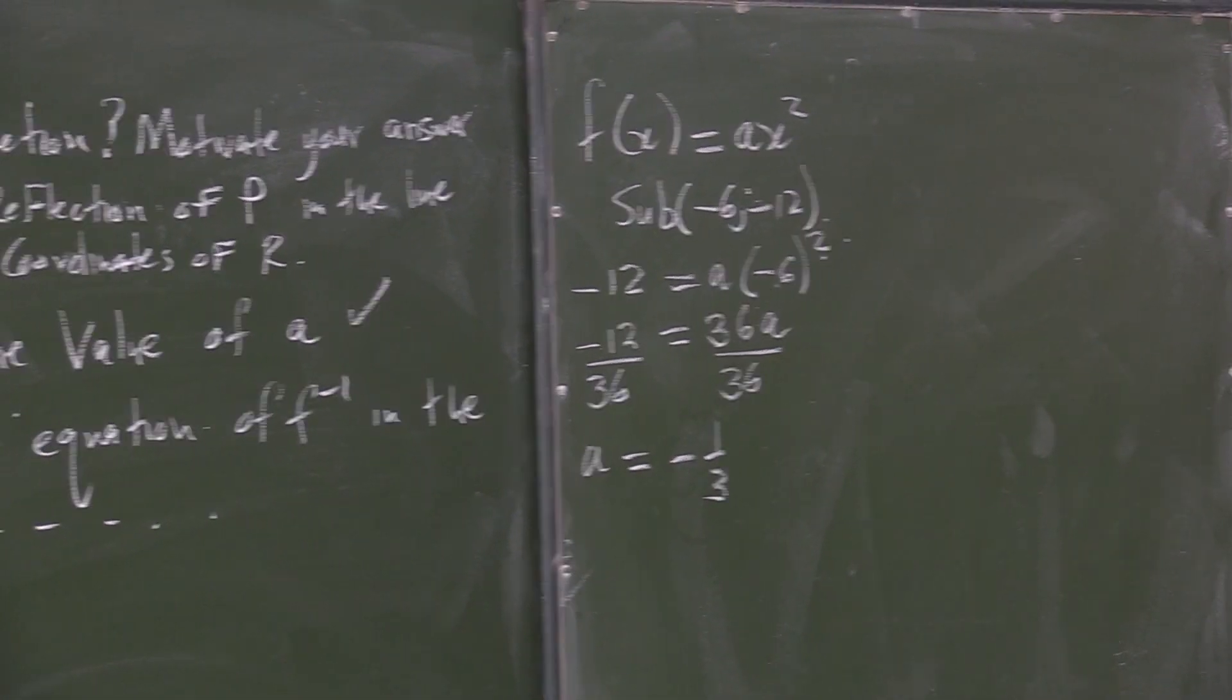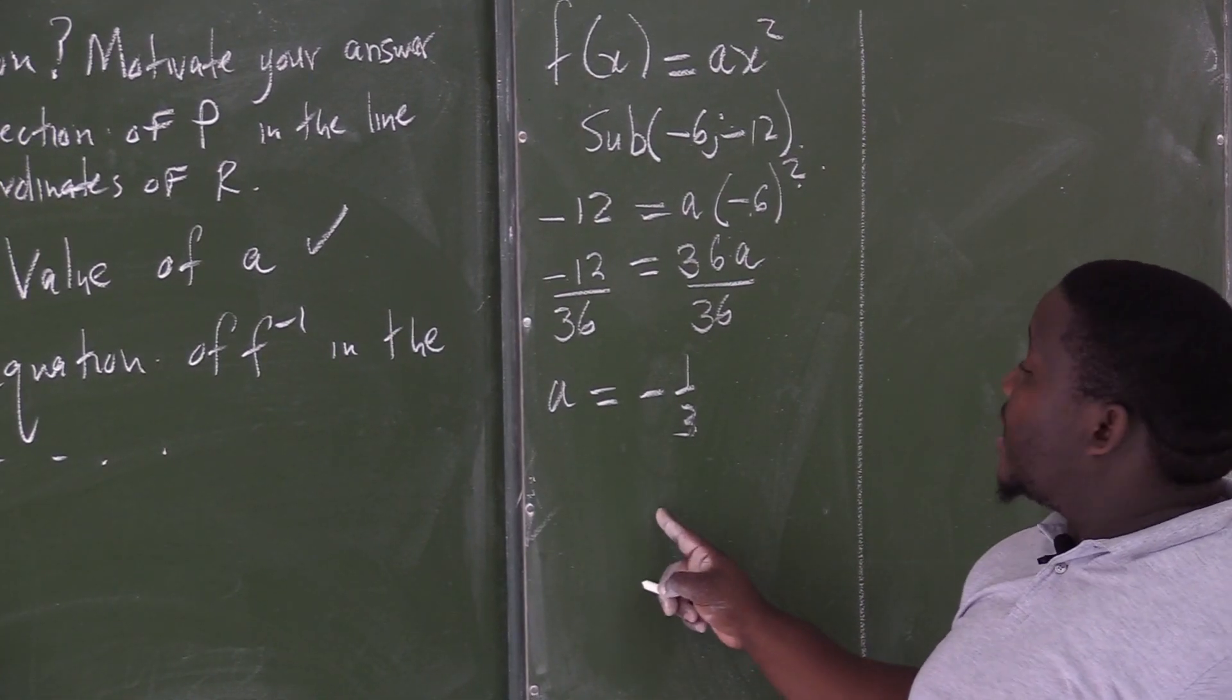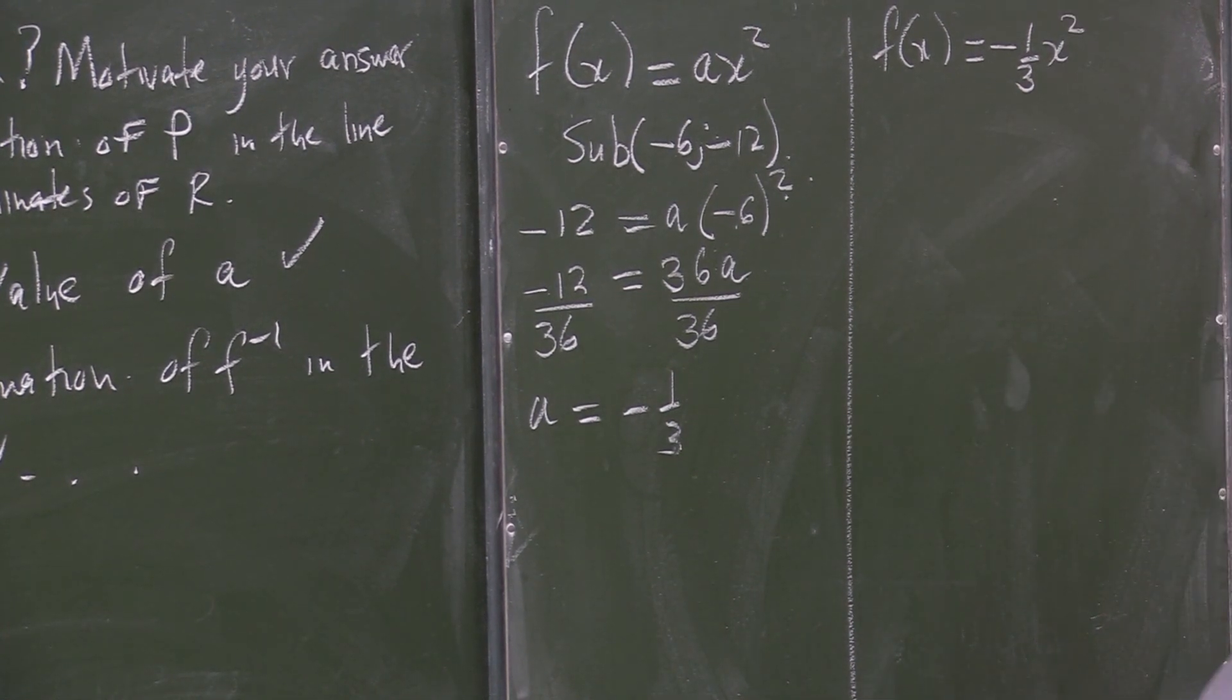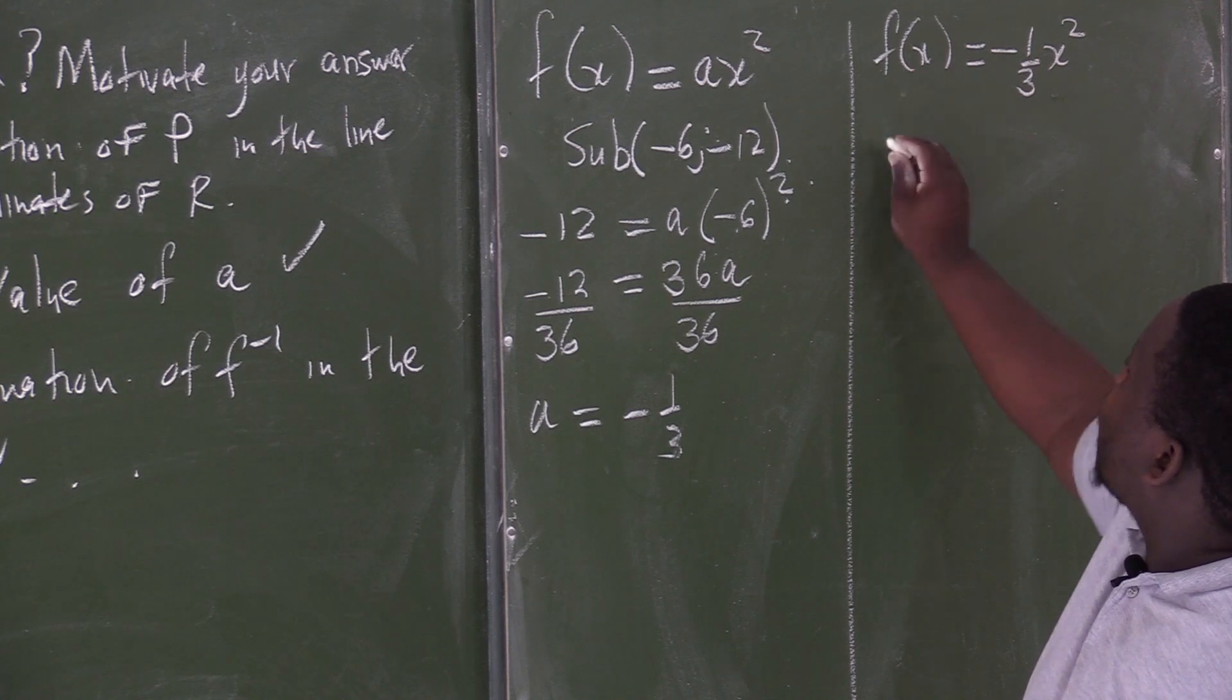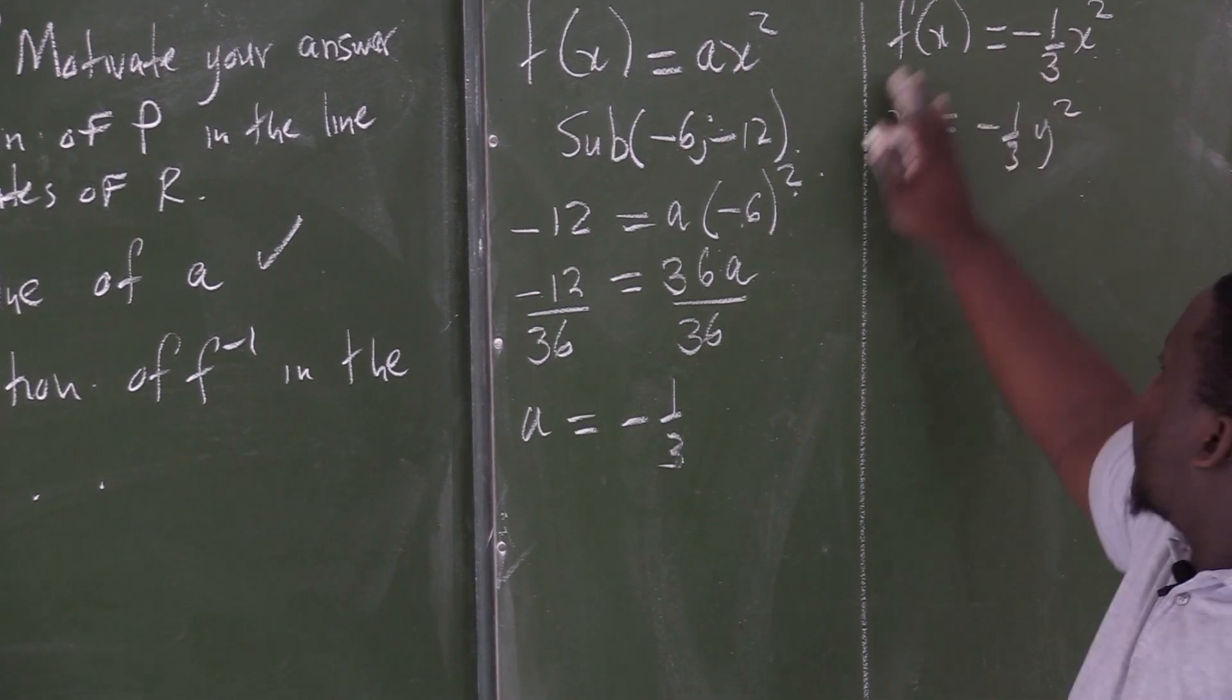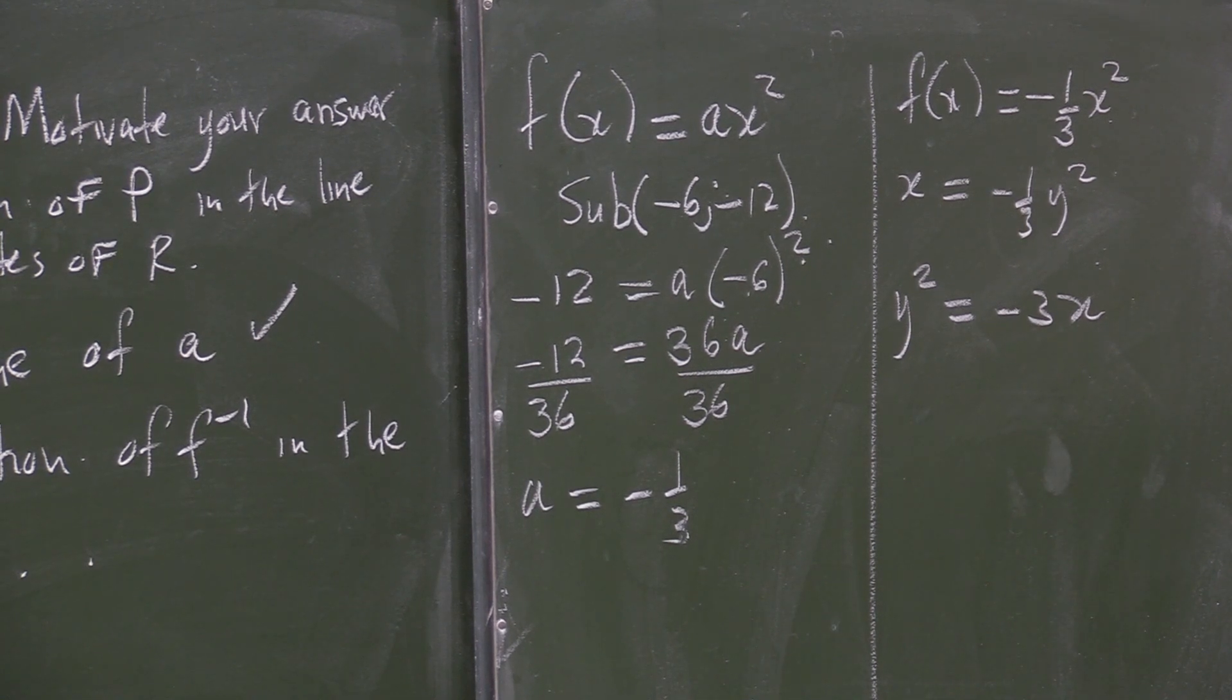Now, write the equation of the inverse of f in the form y is equal to. How to write the equation? Now, remember, you know what is a. What is a? a is negative 1 over 3. It means your f(x) is negative 1 over 3 x squared. This is my f(x). Now, how do I write the equation of the inverse? We know that to find the inverse, we replace y with x and also replace x with y, to get this negative 1 over 3 y squared. Now, how do I solve here? I can divide by negative 1 over 3 on both sides. And this will give us y squared, which is negative 3x. That is what we have by dividing by negative 1 over 3 on both sides.